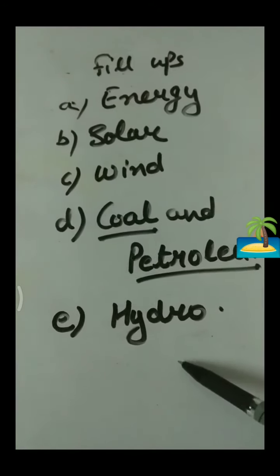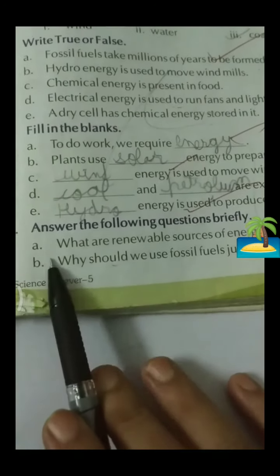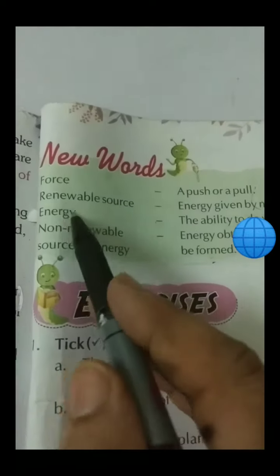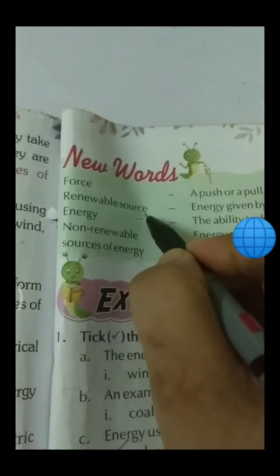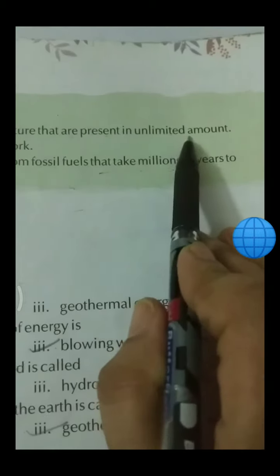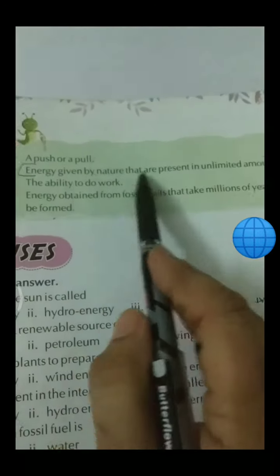Hydro energy is used to prepare electricity in hydro power stations. Question answers, Part A: What are renewable sources of energy? See page number 65. The answer is: energies given by nature that are present in unlimited amounts.